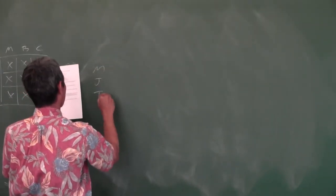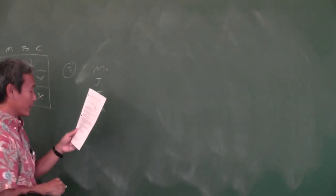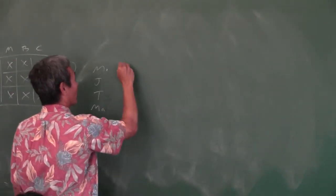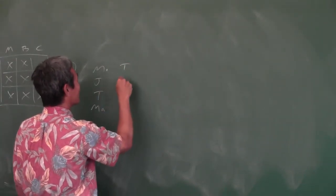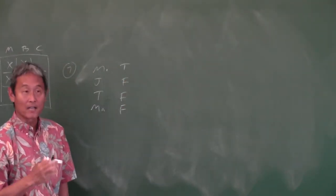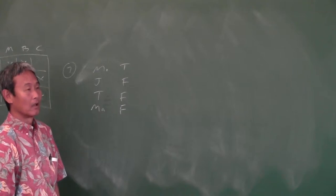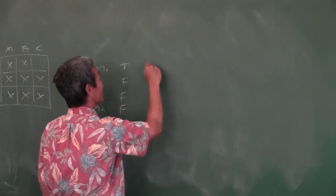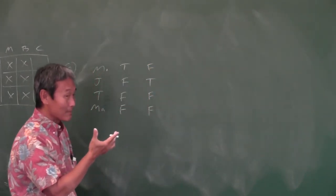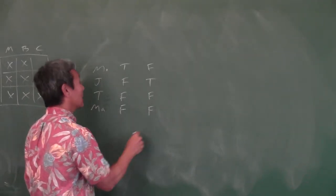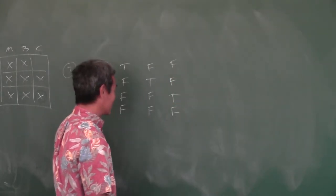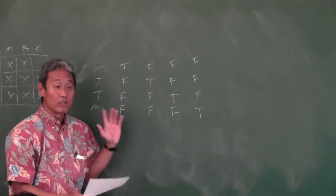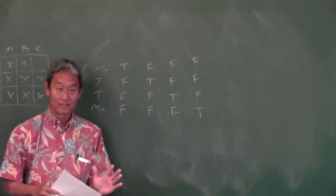You have four statements from Michael, Jermaine, Tito, and Marlon. This is a guess-and-check: there are four cases — Michael's statement is true and the others false; Jermaine's is true and the others false; Tito's is true and the others false; or Marlon's is true and the others false. Go through them one at a time until you hit the right one.